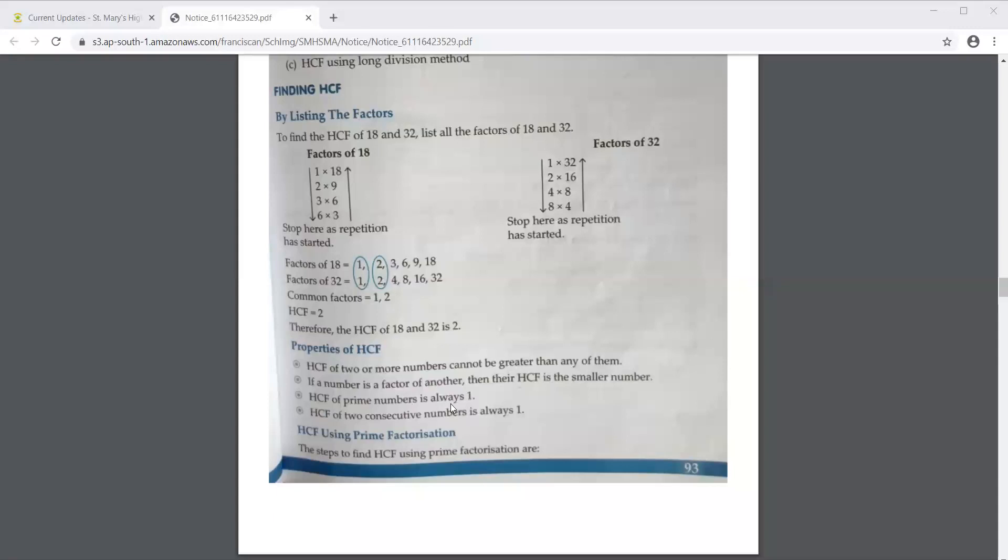Then, HCF of prime numbers is always 1 because prime numbers are numbers which have 1 and the number itself as factors. So whenever you are finding out HCF of any two prime numbers, say for example 5 and 7.